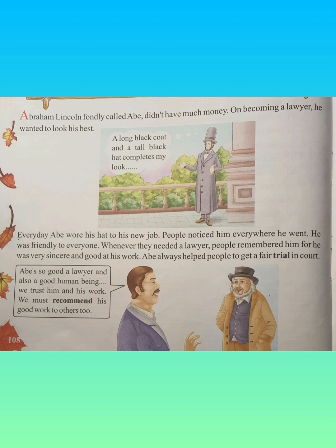Every day Abe wore his hat to his new job. People noticed him everywhere he went. He was friendly to everyone. He used to wear a long black coat and a tall black hat, and because of his dress and his skill he was noticed everywhere. Whenever they needed a lawyer, people remembered him, for he was very sincere and good at his work. Underline remembered — remembered means recalled. Underline sincere — sincere means honest.